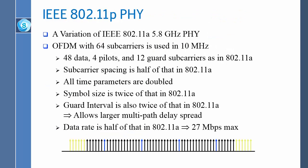Any protocol designed these days uses OFDMA. Previously everything was CDMA — that was when 3G was developed in the 90s. Now it is OFDMA. So 802.11p uses OFDMA with 64 subcarriers in 10 MHz: 48 for data, 4 pilots, and 12 guards — very similar to 802.11A.